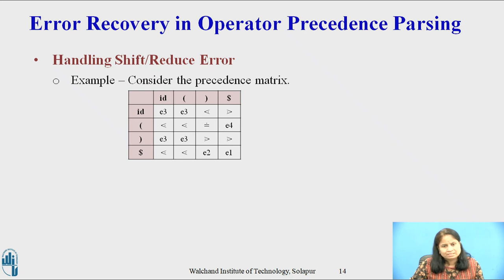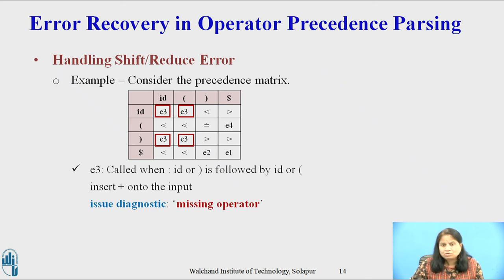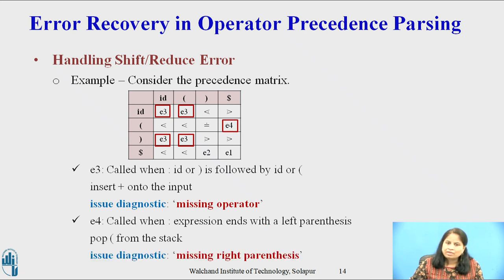Consider the same example. E3 is called when an ID or right parenthesis is followed by an ID or left parenthesis — it means there is no operator — so insert plus onto the input and issue the diagnostic 'missing operator'. E4 is called when the expression ends with a left parenthesis, so pop the left parenthesis from the stack and issue the diagnostic 'missing right parenthesis'.